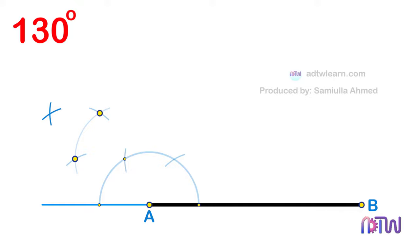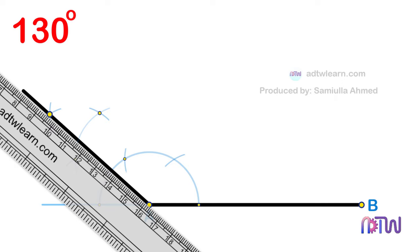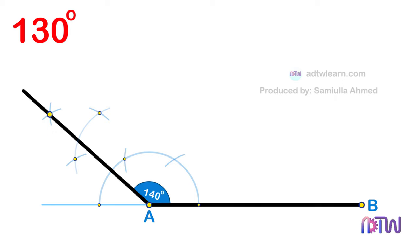Draw a line passing through this point from endpoint A of the line segment. This will give the 140-degree angle.